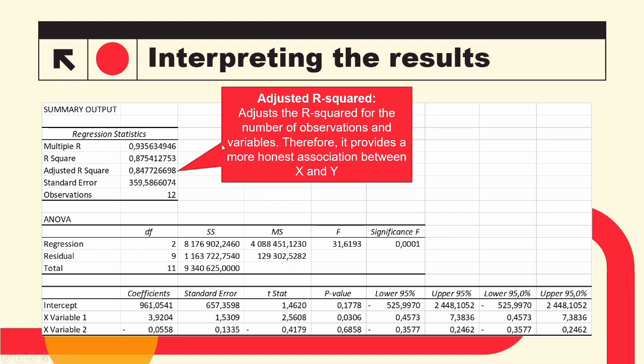As such, we then get the Adjusted R-squared, which is interpreted in the same way as R-squared but is a more realistic and therefore better measure. In this example, machine hours and units produced explain 84.77% of the variation in maintenance costs. This is a very good proportion of explanation.